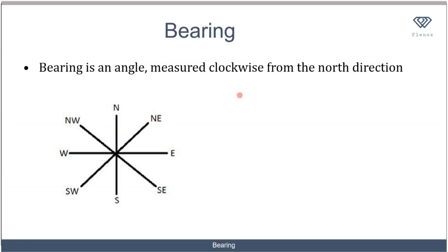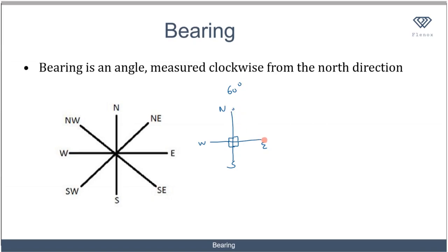We measure bearing from the north direction, clockwise. So let's say I want to identify a bearing of 60 degrees. With my cardinal points — north, south, west, and east — I consider north to east is 90 degrees, east to south is also 90 degrees, so south is 180 degrees, west is 270 degrees, and the full cycle is 360 degrees. So 60 degrees lies between 0 and 90 degrees — this is a bearing of 60 degrees.